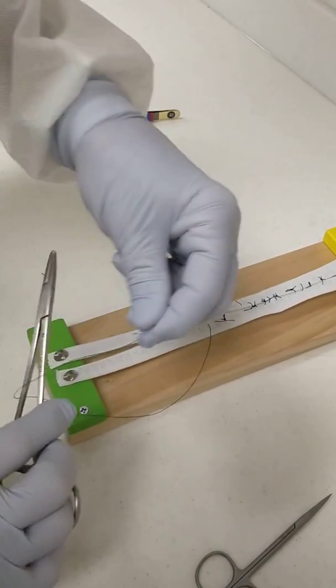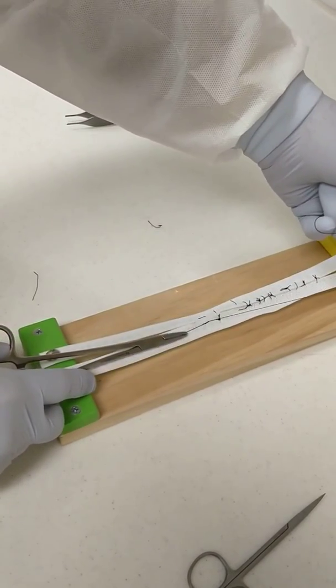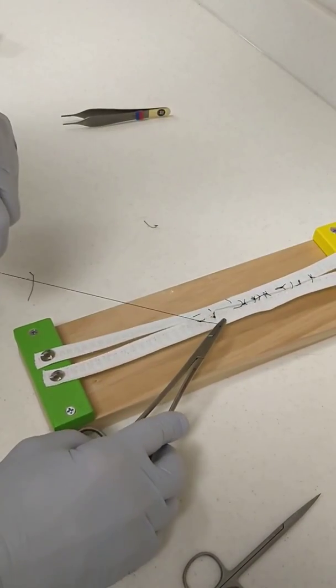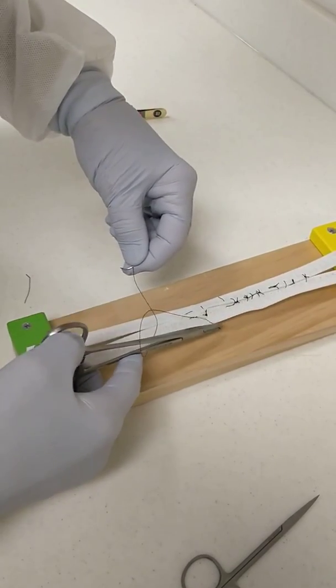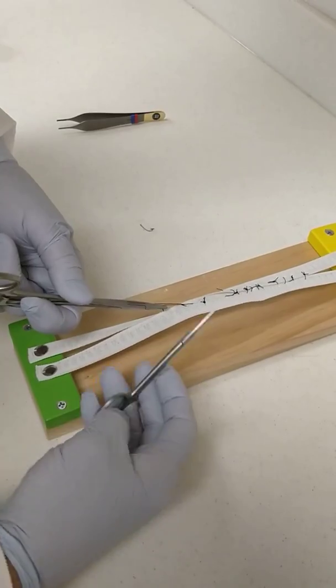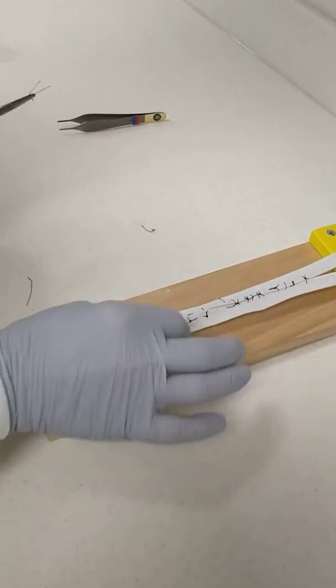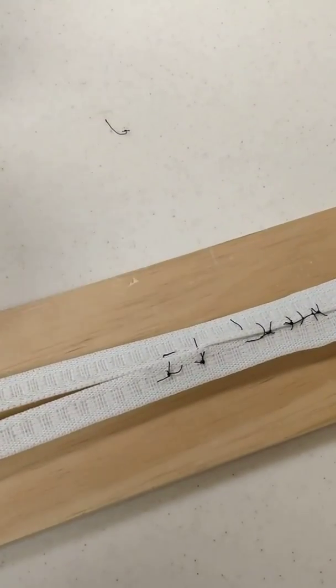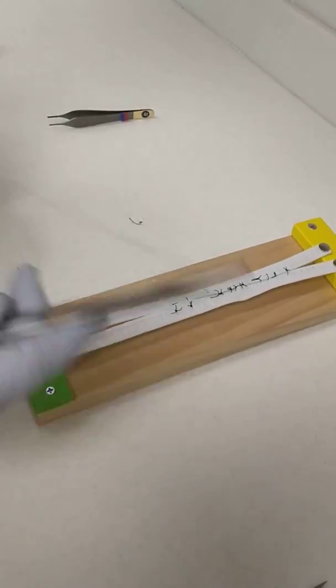Now you just pull this tight on the buckle. That's the horizontal mattress. And it's useful when you're trying to bunch the tissue together, especially when it's trying to pull apart.